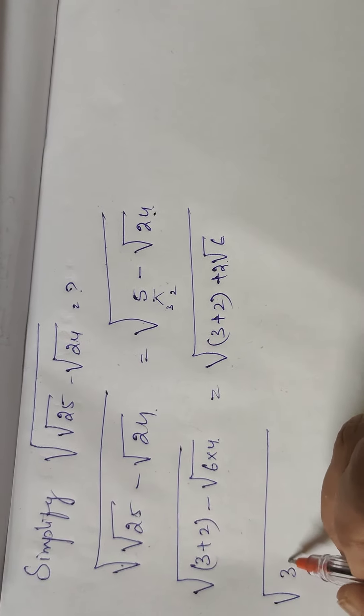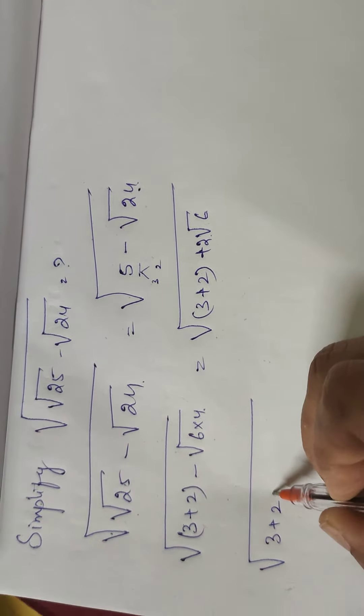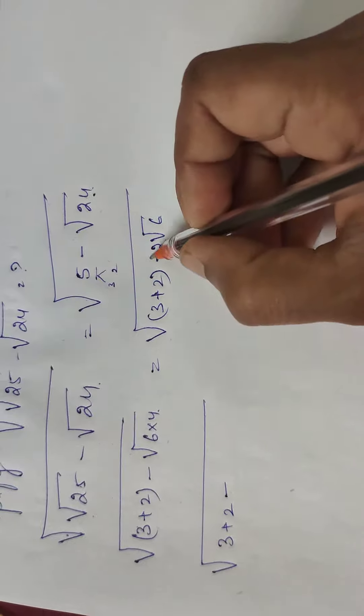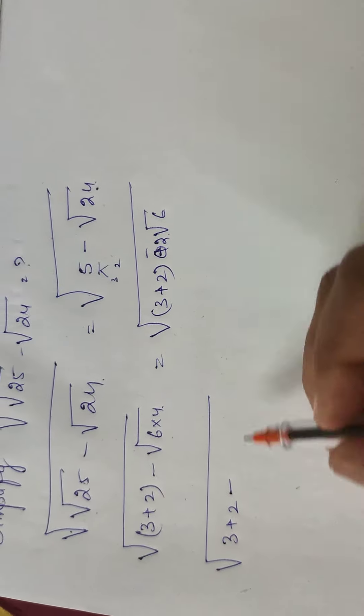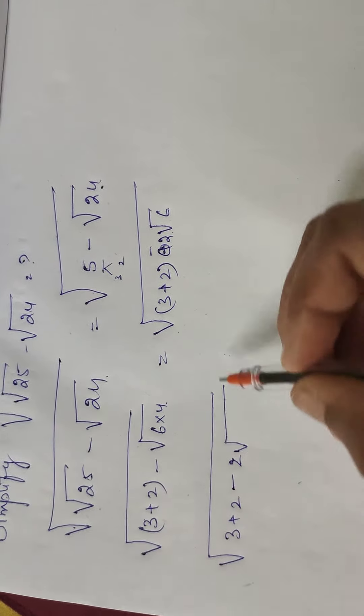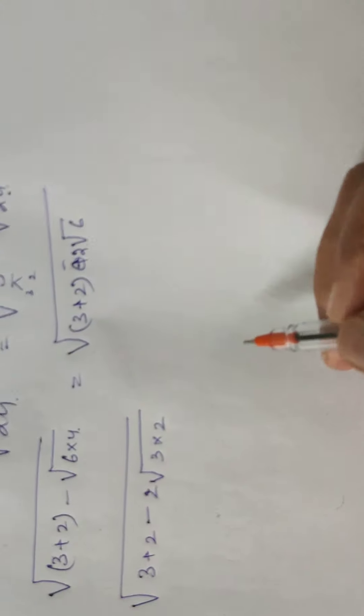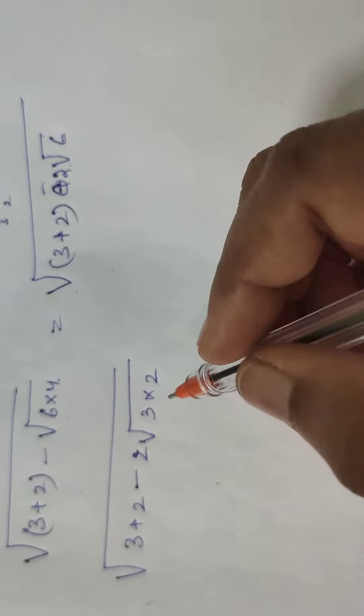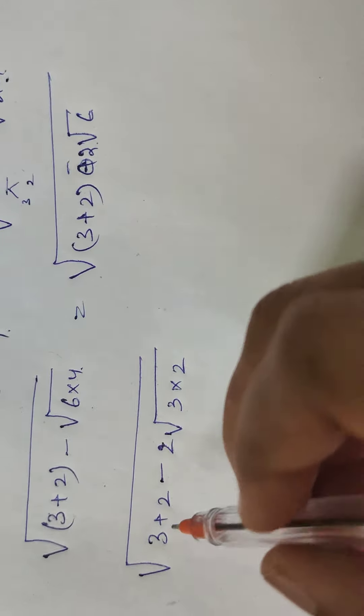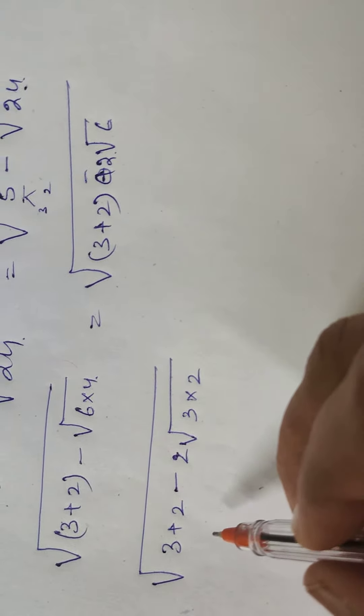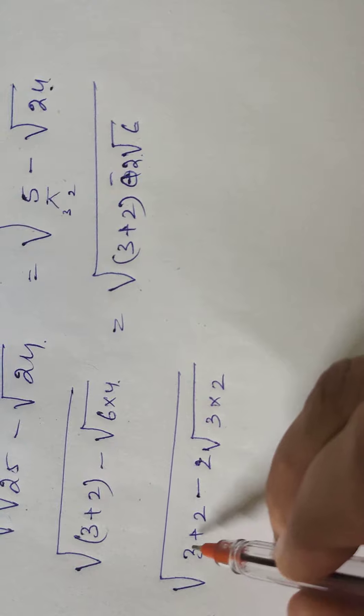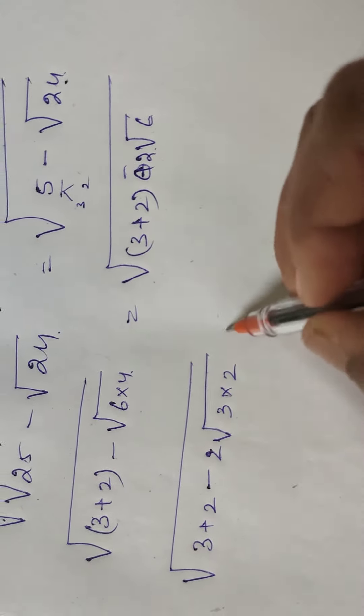Now in the next step, what we will do is 3 plus 2 minus 2 into root 3 times root 6. Okay, so now what I can do here is I will be using another small trick by applying the square and root to this 3 and 2.